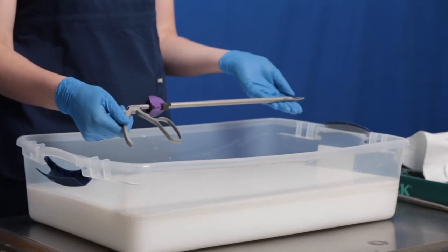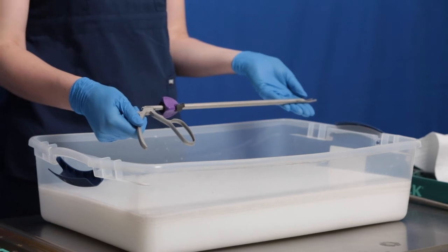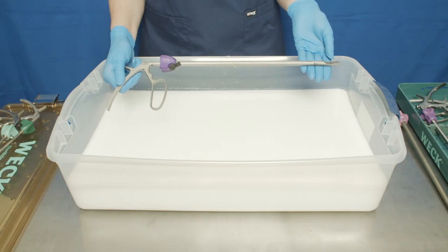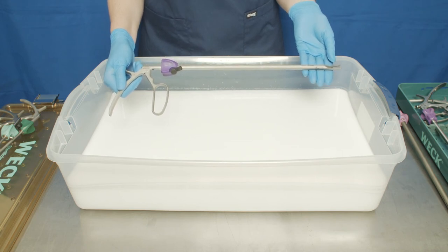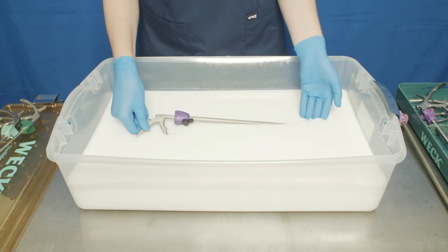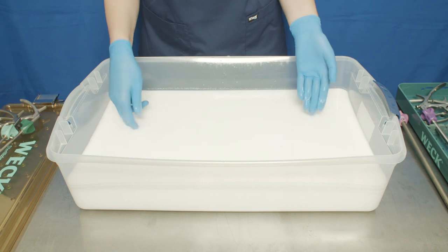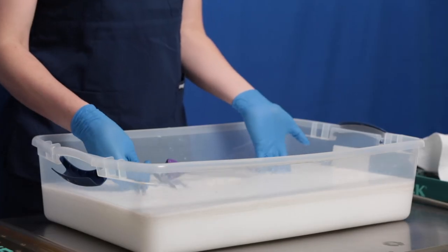There are multiple ways to lubricate and it is important to follow the lubrication manufacturer's guidelines. One manual lubrication process example is to take the device and submerge it into the lubricant for 30 to 45 seconds. Then withdraw it and prepare it to be sterilized.